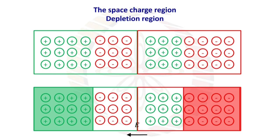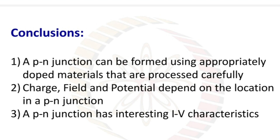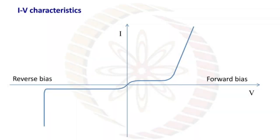Now moving towards some conclusions: a P-N junction can be formed using appropriately doped materials that are processed carefully. Charge, field, and potential depend on the location in a P-N junction. A P-N junction has interesting I-V characteristics. The I-V characteristics of a P-N junction diode is shown in this graph for reverse bias and forward bias.